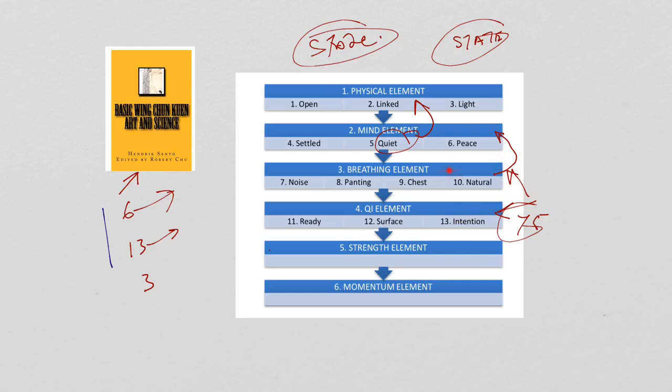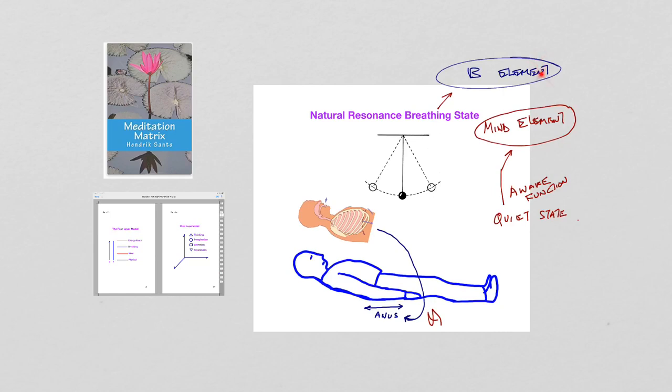Now, once you know the breathing elements, you need to get to the mind element. So when one does the natural resonance breathing or gets into the natural resonance breathing state, one's mind element is using the aware functions and in the quiet state.